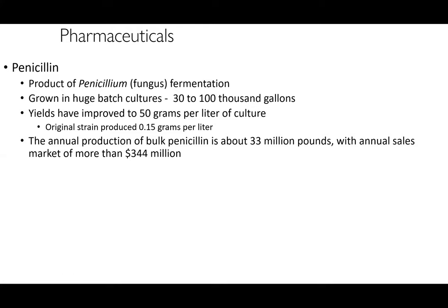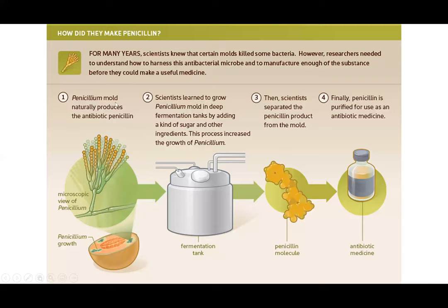The annual bulk production of penicillin is about 33 million pounds, with annual market sales of more than $344 million. We typically think of penicillin as an older antibiotic, but it's still highly effective at treating many types of infections, including syphilis — it's about 90 years old but still really important. Penicillium will produce penicillin naturally, and they're grown in deep fermentation tanks with specific types of sugar and other ingredients. The penicillin product is then separated from the mold itself and purified as an antibiotic.